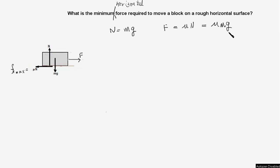But that is not what the question says. There is no constraint about the direction of the applied force — it need not be horizontal; it can be in any direction. So we consider F pulling the block at an angle theta with the horizontal. The problem essentially boils down to finding the most optimum angle theta at which the magnitude of the force F would be minimum.